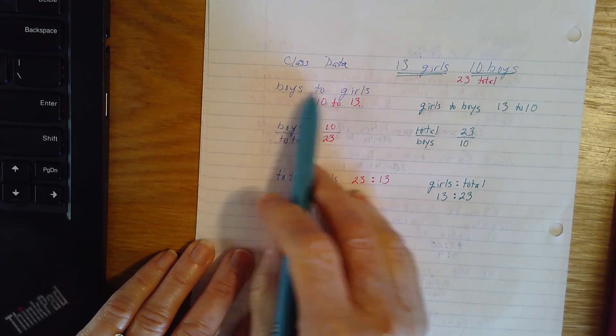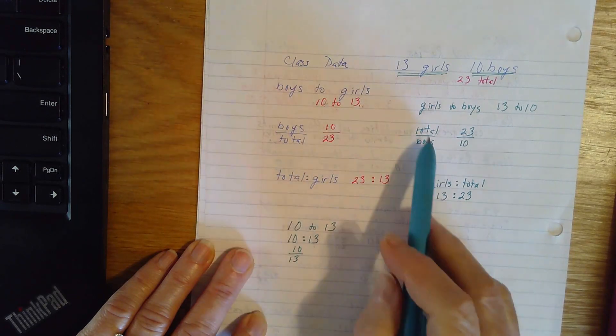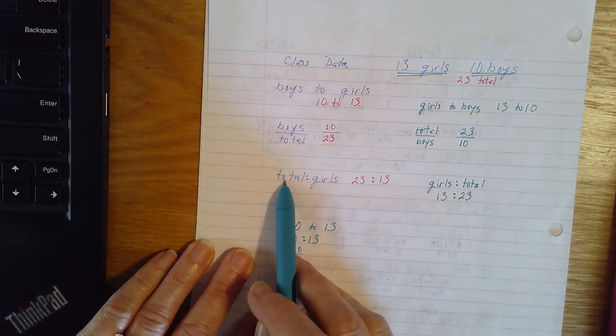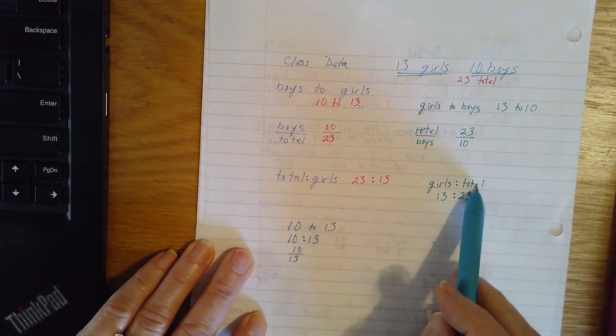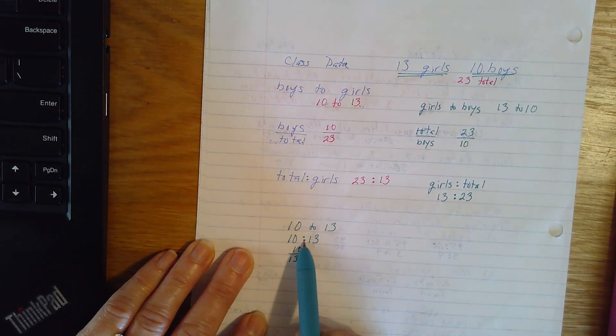But we can compare boys to girls, girls to boys, boys to total, total to boys, total to girls, girls to total. And any of them could be written with the word to, a colon, or a fraction bar.